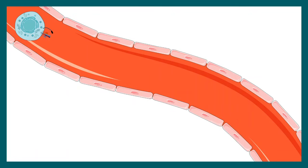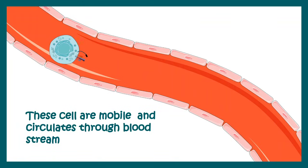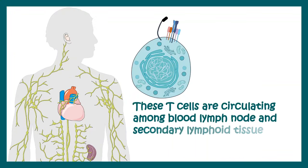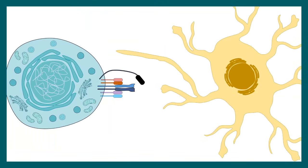These cells move from one place to another throughout the body, and they can possibly encounter a dendritic cell in this process. Let's see what happens in this encounter — dendritic cells are antigen presenting cells.